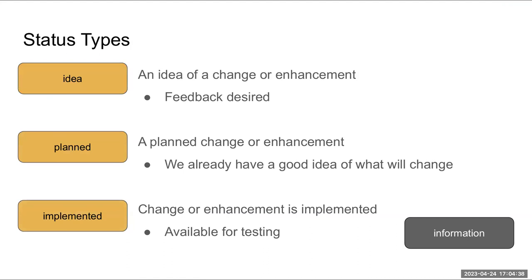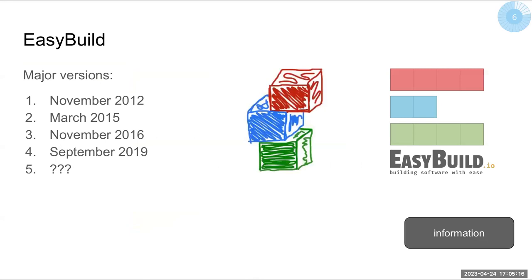We also have status types. Some things have an 'idea' flag — where we're desiring feedback. There are 'planned' changes where we already know what we want to do and just need to get on and do it. And there are things already implemented — available for testing. I have already built something with the EasyBuild 5 development branch.